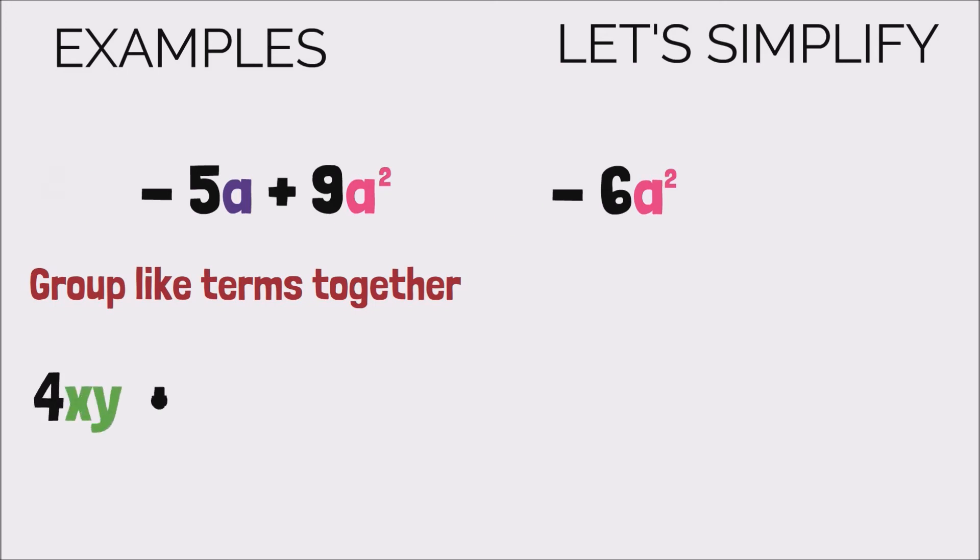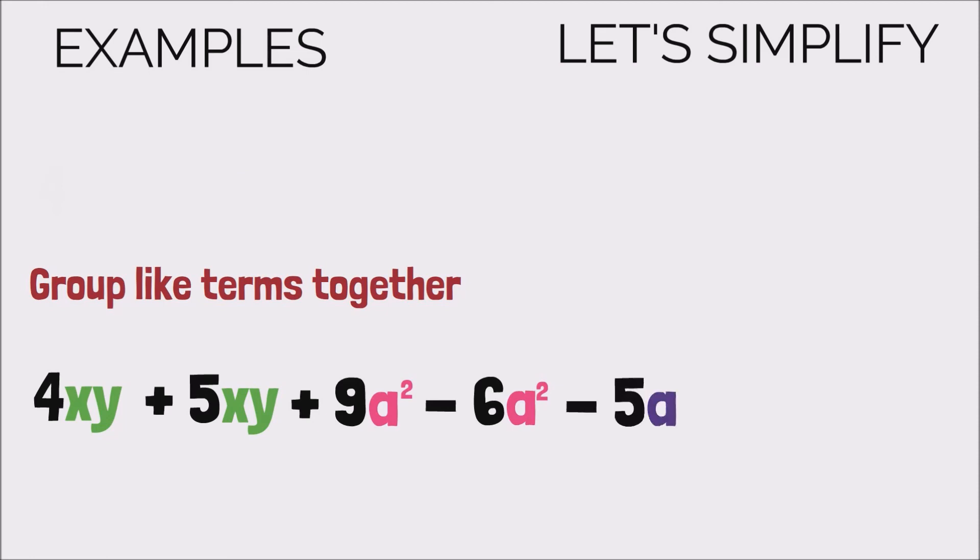We're gonna start with our 4xy. There's another xy, so we're gonna move the plus 5xy directly beside it. Then we have 2 a squared terms, so I'm gonna put the plus 9a squared, right? And then I'm gonna move the minus 6a squared directly beside it. And then finally we're gonna write our minus 5a term, because there's no other a there that we can pair it with.